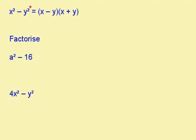If you see two square numbers, one subtracted from the other, this is what we call the difference of two squares and it can be factorised like this.